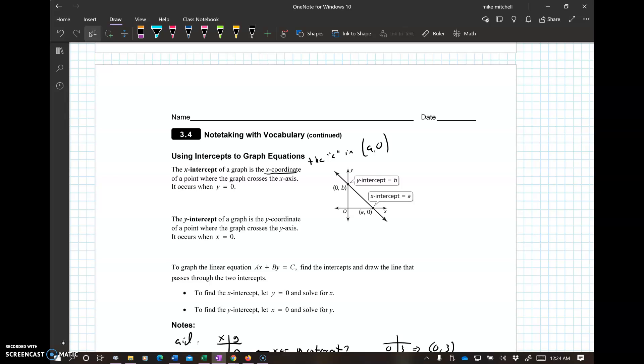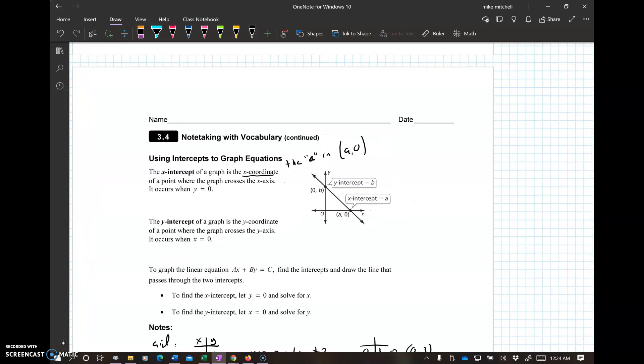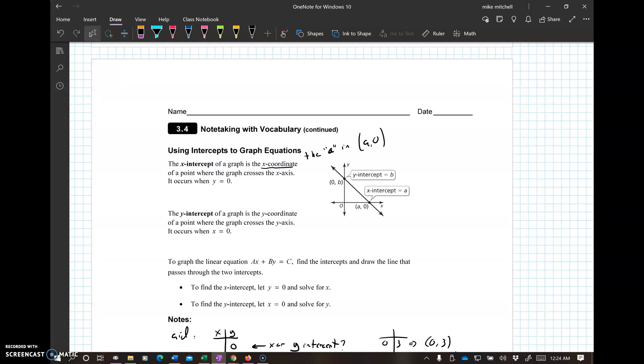Using intercepts to graph. So here, the x-intercept of the graph is the x-coordinate. So we're calling that the a and a0. You can write that either way. You can just write the a. You can write it a0. You do need to call it the x-intercept. When you do that, it's the point where the graph crosses the x-axis. It occurs when y equals 0.